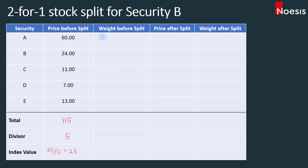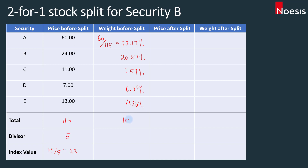If you want to calculate the weight of each security, you will just take the price, divide by the total price, which is 115, times 100%. So that is 52.17% for A. For B, that will be 20.87%. For C, that will be 9.57%. D is 6.09%, and E is 11.3%. That should sum up to 100%.